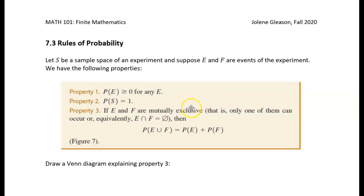All right, let's talk about some more rules for probability. Now, you probably already know a lot of these rules. For example, in the last lecture, we said that the probability of an event has to be greater than 0. In fact, it has to be between 0 and 1. So that basically takes care of property 1.